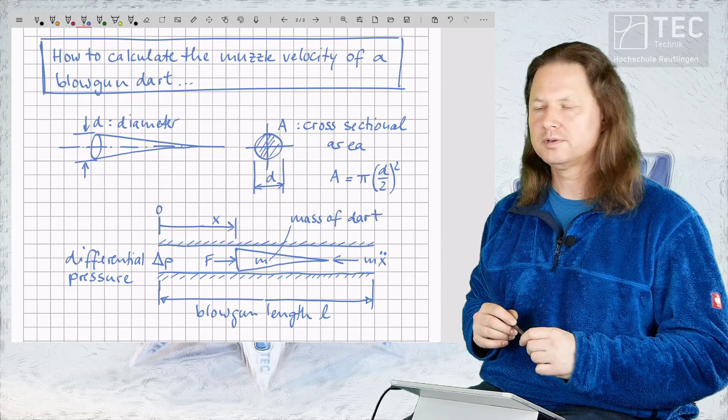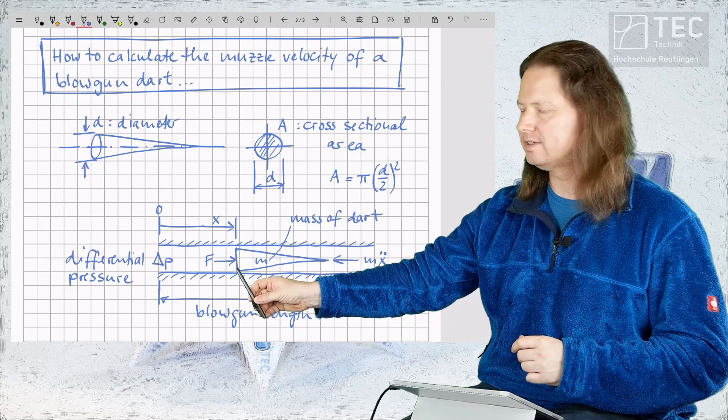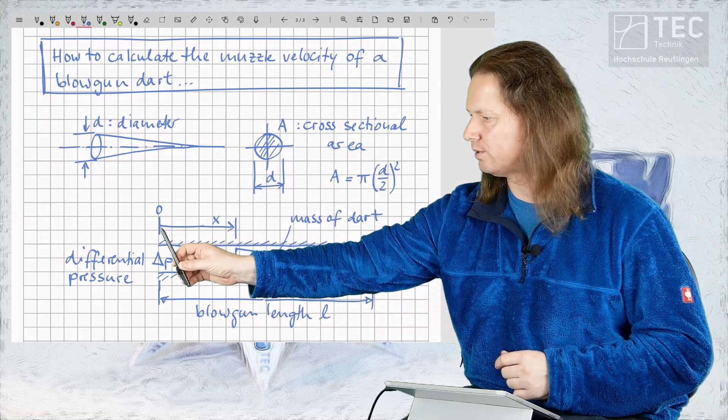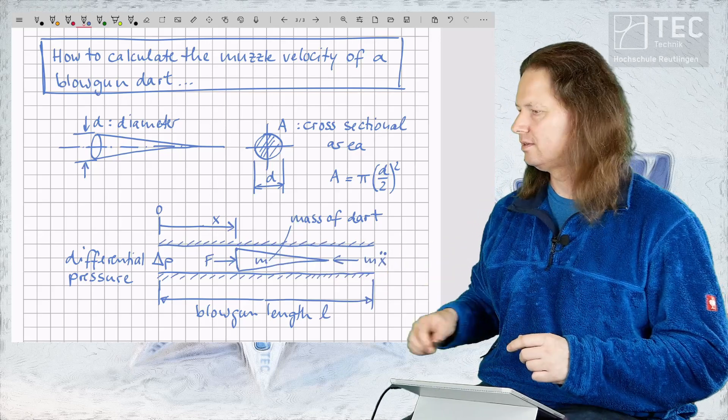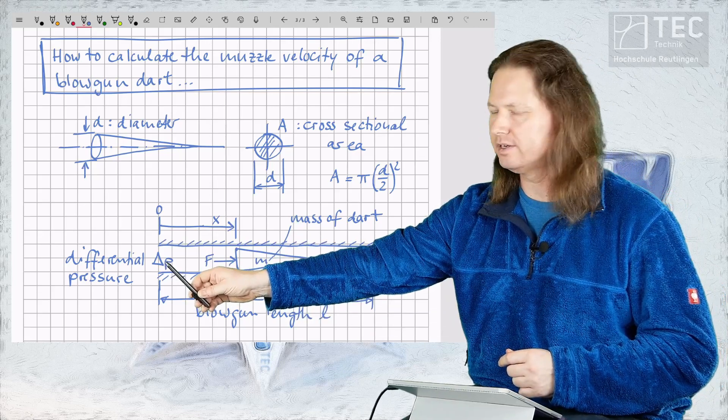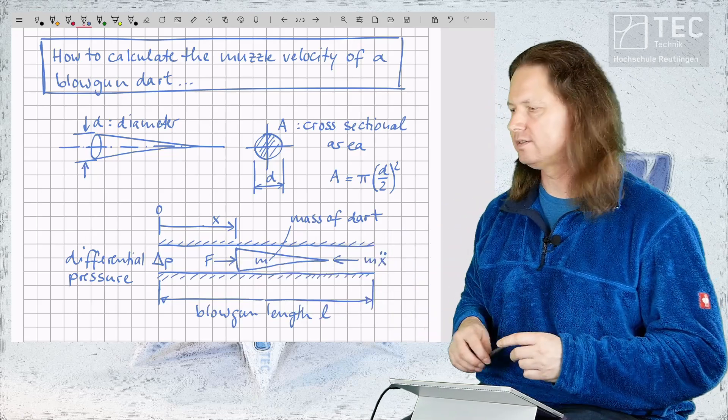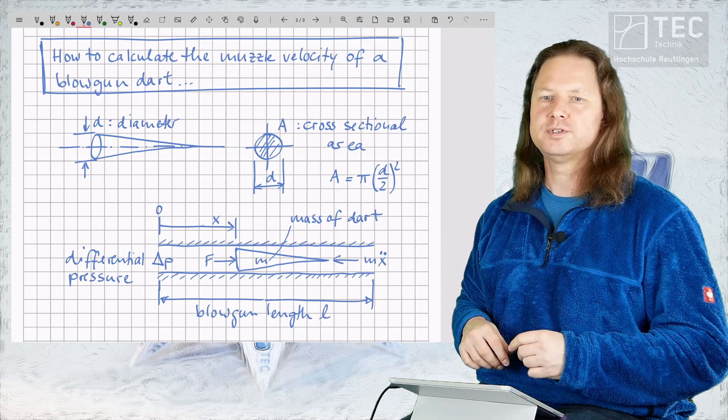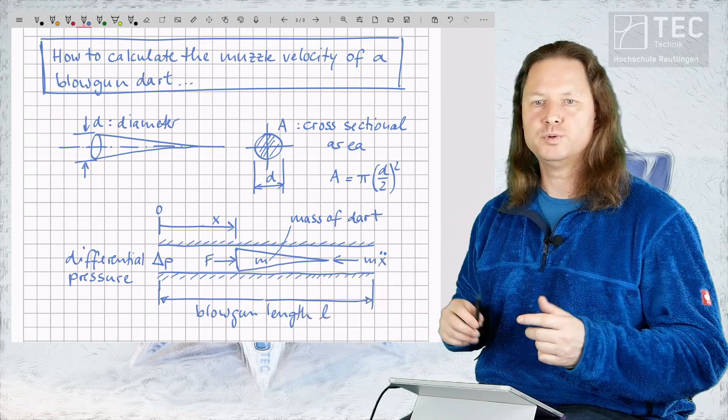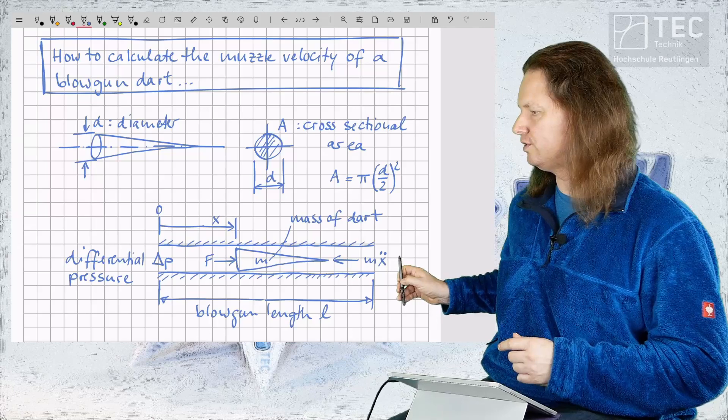Inside our blowgun let's denote the position of the tail of the dart by the coordinate x. The dart is accelerated by exhaling air into the near end of the tube. This creates a differential pressure delta p at the tail of the dart which results in an accelerating force F that moves the dart to the right out of the tube.